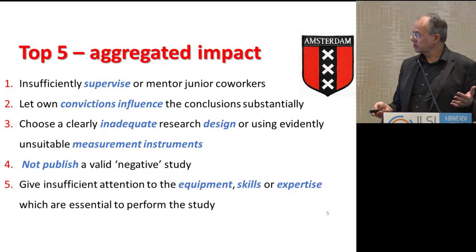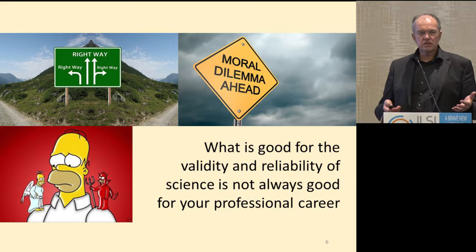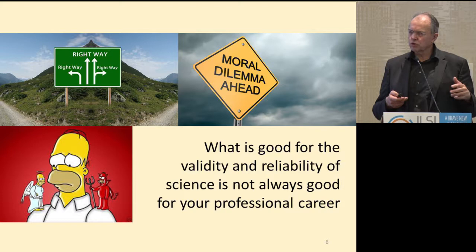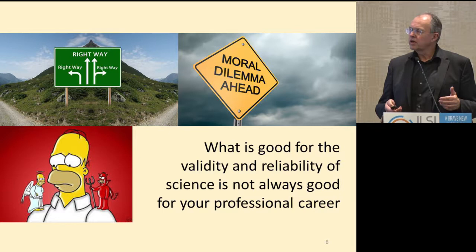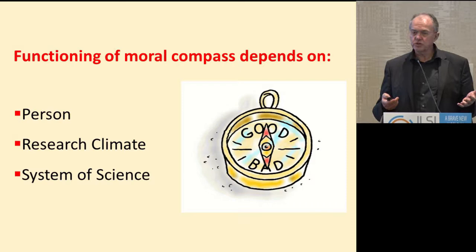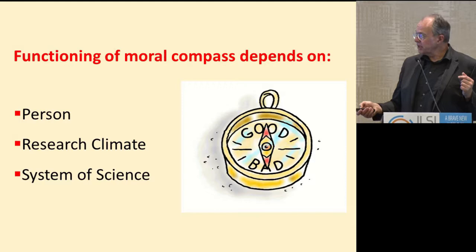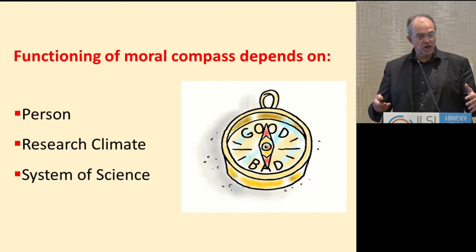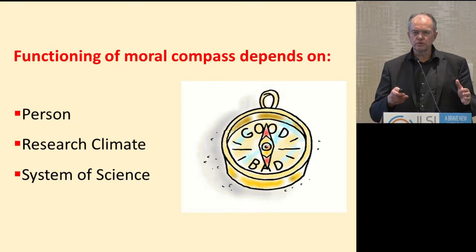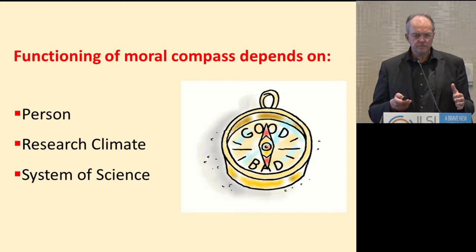This has everything to do with the dilemmas of how science works — and we need to be more open about these dilemmas. What is good for you as a scientist is not always good for science as a whole, and to handle that tension you need a moral compass. Like a real compass, the quality depends on the person who holds it. Really important is the external influence of the direct environment — the research climate. I increasingly believe research climate is so important for how scientists behave. We are social animals: we copy behavior we see around us. When everyone in the lab is cutting corners, you start cutting corners yourself — it's unavoidable.